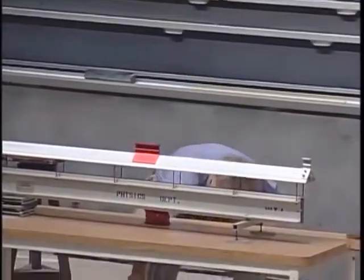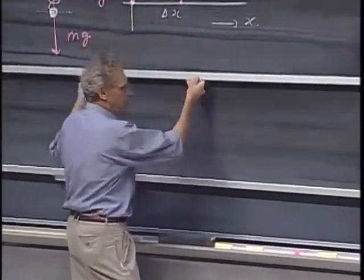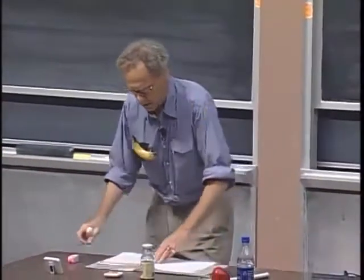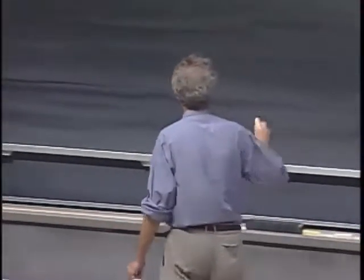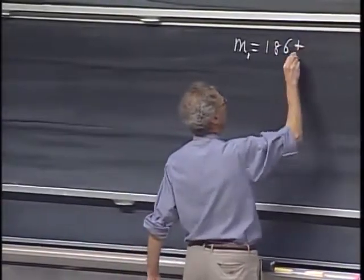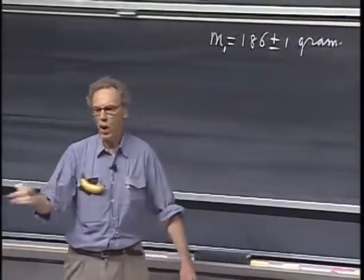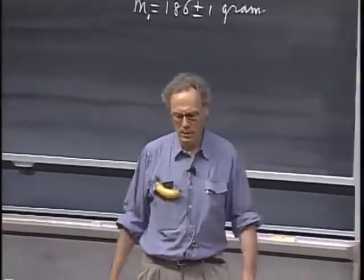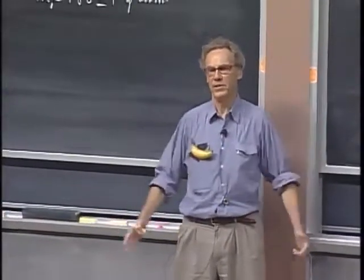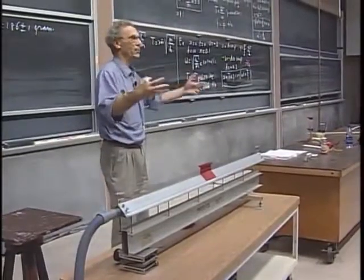I have an object here. This object has a mass, 186 plus or minus one gram. Call it M1. I'm going to oscillate it and we're going to measure the period. But instead of measuring one period, I'm going to measure ten periods because that gives me a smaller uncertainty, a smaller relative error in my measurements.